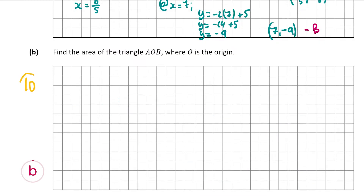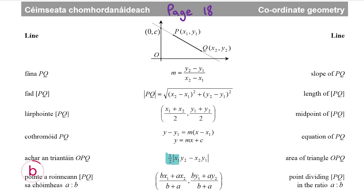Part B wants us to find the area of the triangle AOB, where O is the origin. We have a formula for this in the formula and tables book on page 18. It's a half times the absolute value of x1 times y2 minus x2 times y1, where (x1, y1) and (x2, y2) are two coordinates. Importantly, the third point must be (0, 0) — and we are told one vertex is the origin, so we can use this formula.